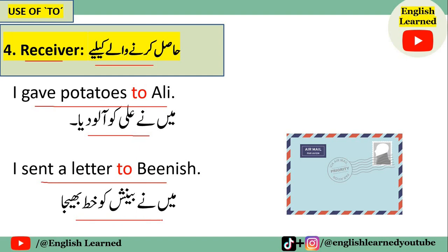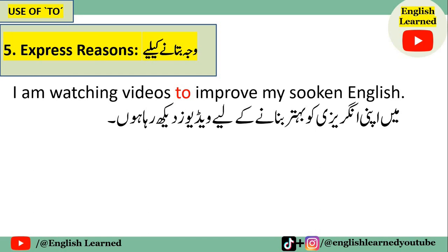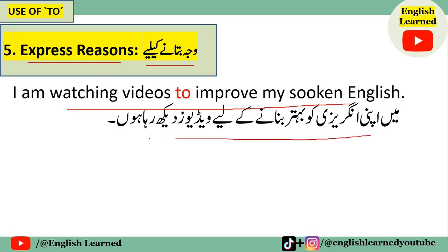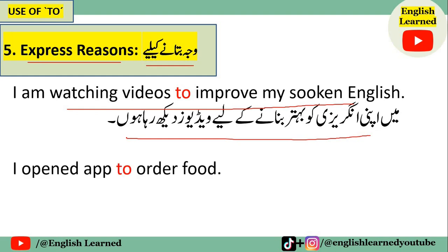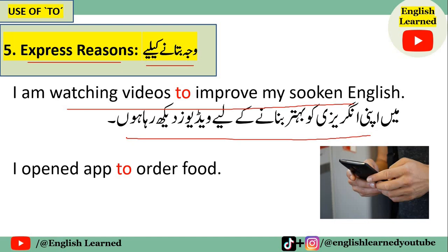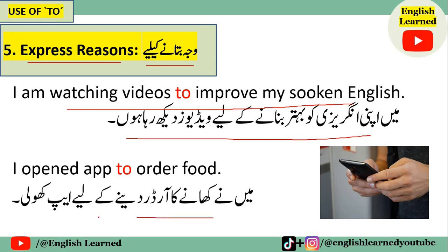Ek aur case mein bhi hum 'to' use kar sakte hain. Fifth aur last case jismein hum 'to' preposition ka sahih istamal kar sakte hain woh hai expressing reasons — yani ke wajah bataane ke liye. Example: 'I am watching videos to improve my spoken English' — main apni English ko behthar banaane ke liye videos dekh raha houn. Ek aur example: 'I opened the app to order food' — maine khaane ka order dene ke liye app kholee.